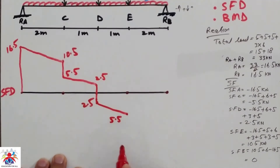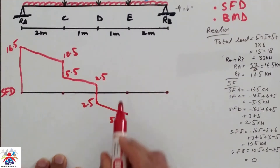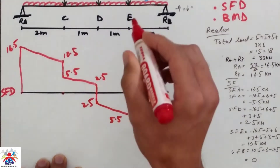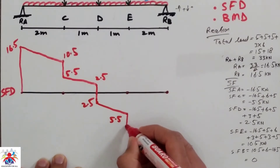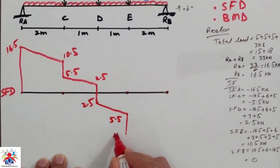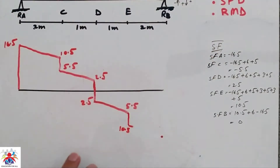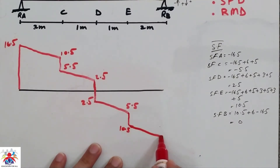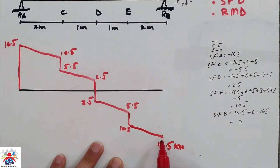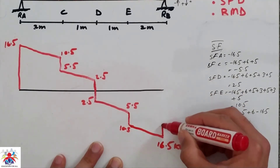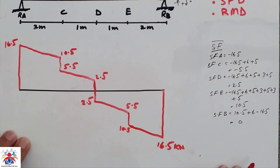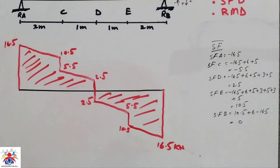At point E we have another point load of 5 kilonewton acting downward, so we go further down to minus 10.5 kilonewton. Then from E to B we have a UDL of 3 multiplied by 2 equals 6 kilonewton. Adding 6 to 10.5 gives 16.5 kilonewton, and at point B we have a reaction of 16.5 acting upward, so we connect this point to B — that is how you draw the shear force diagram.